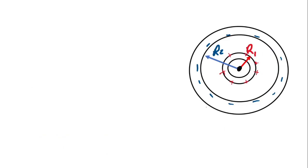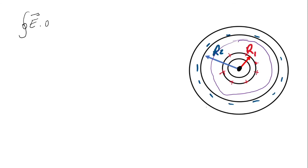So the electric potential difference V1 minus V2 becomes the integral from R1 to R2 of E dr. Now we are going to calculate the electric field inside this zone, meaning between R1 and R2, inside this magenta sphere. We use Gauss's Law to find this electric field. Gauss's Law states the integral of E over enclosed area A times dA equals Q enclosed over epsilon zero. In this case, the charge enclosed inside the magenta sphere is just plus Q.